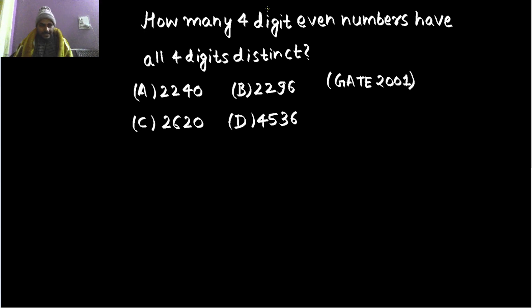Hello everyone, let's solve this problem which appeared in GATE 2001. It's from permutation and combination. How many four digit even numbers have all four digits distinct? Let's understand the statement first. How many four digit?